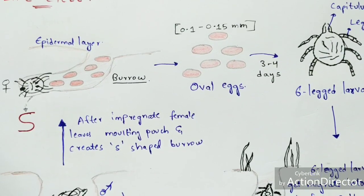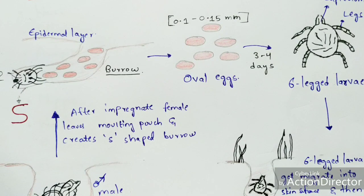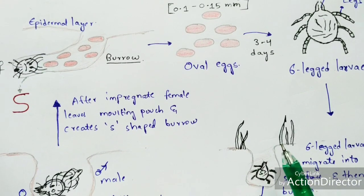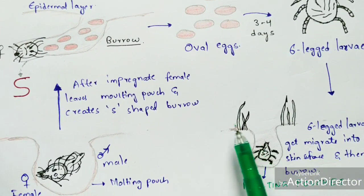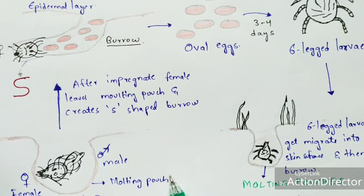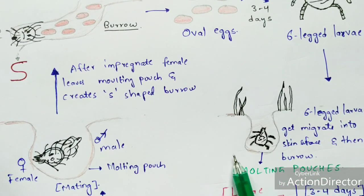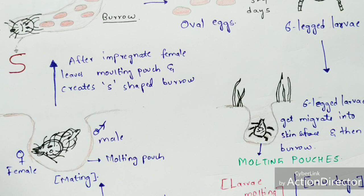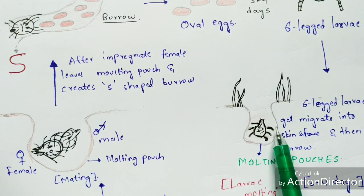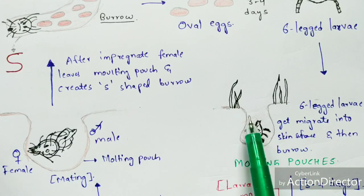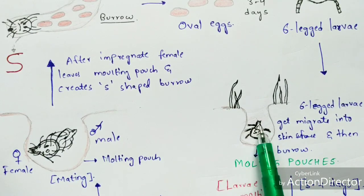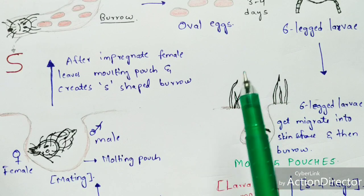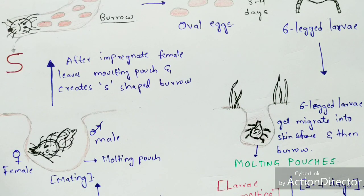The six-legged larva enters into the deep skin surface and immediately forms a burrow. This burrow is called the molting pouch. It is named the molting pouch because this is the structure where the six-legged larva undergoes the molting process. Molting is where the larva gets transformed from the immature form to the mature form — that is, from larva to nymph to adult mite.